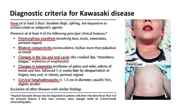The diagnostic criteria for Kawasaki disease involve a combination of clinical features and laboratory findings. Classic Kawasaki disease is diagnosed when a patient has a fever for at least five days and presents with at least four of the following five principal clinical features. First: polymorphous rash involving the extremities, trunk, and perineum.